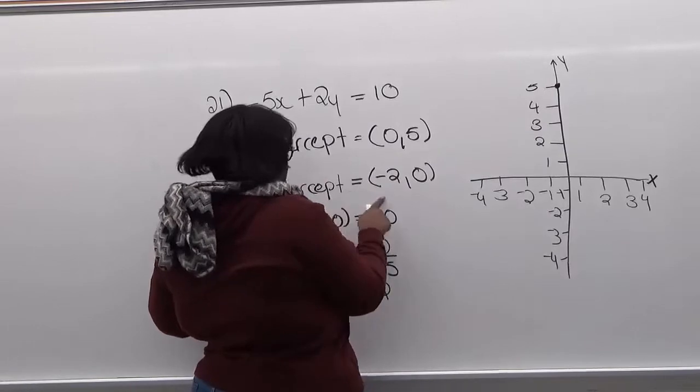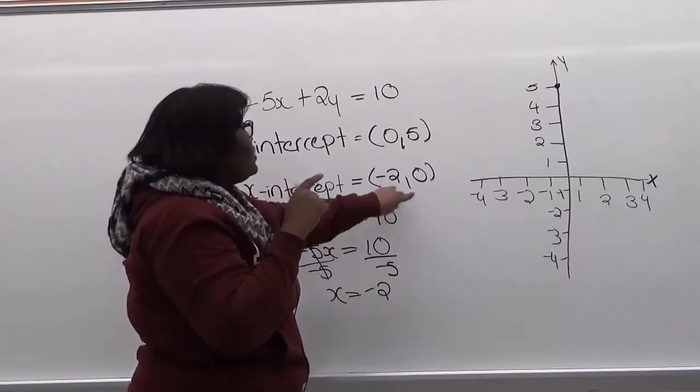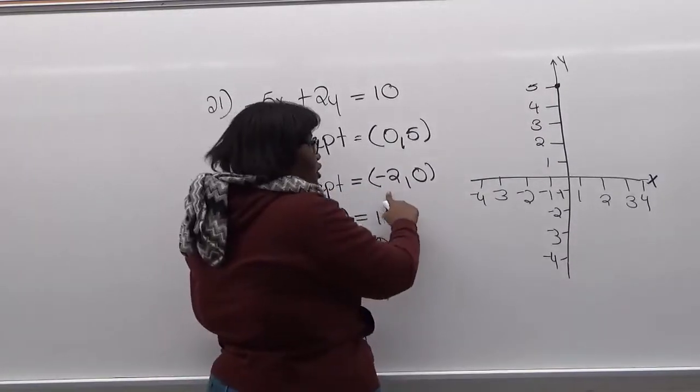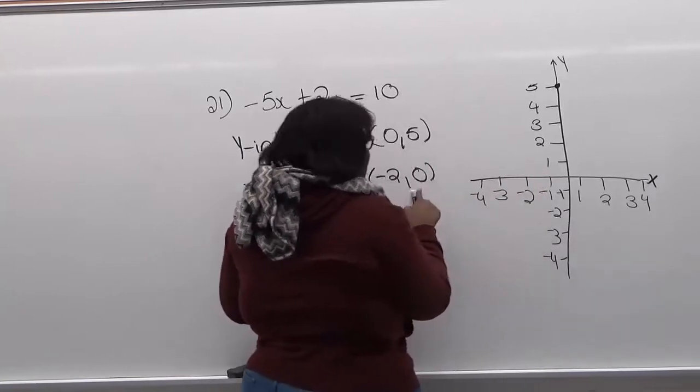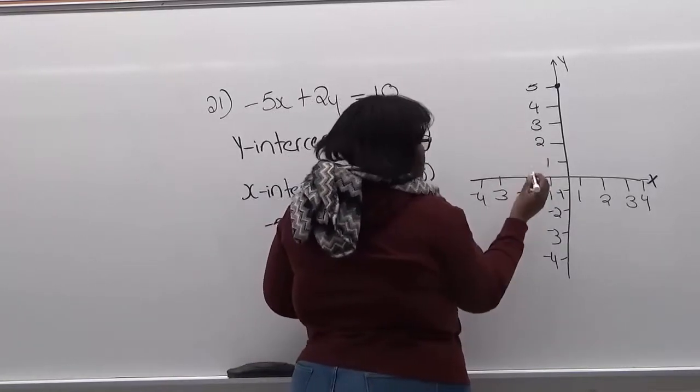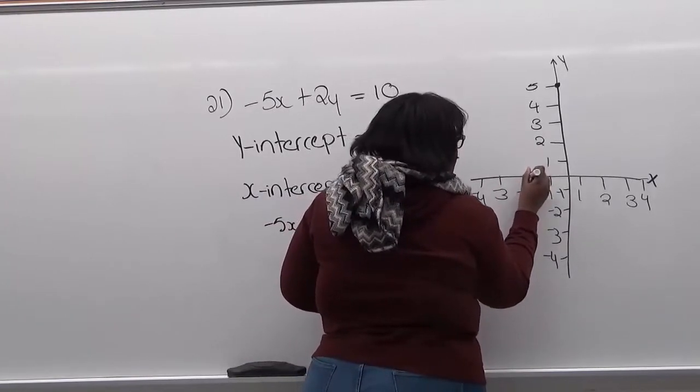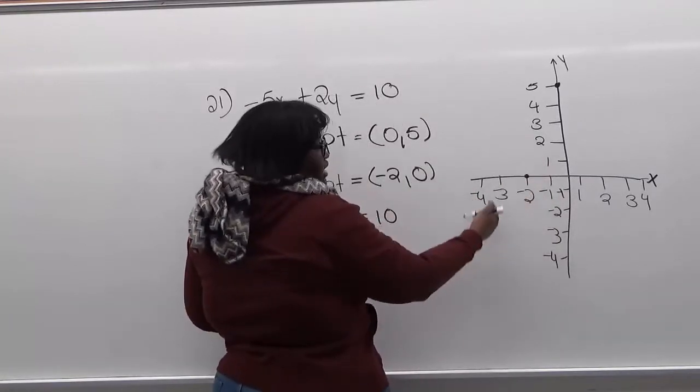Now x-intercept is at (negative 2, 0). So we're going to go to negative 2 and since it's at 0, we're not going to move up or down. So this would be our x-intercept. As you can see, it crosses x.